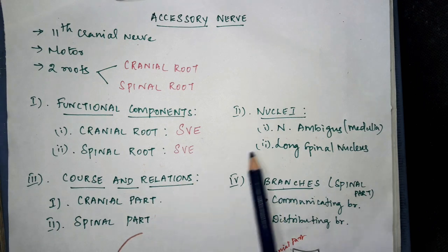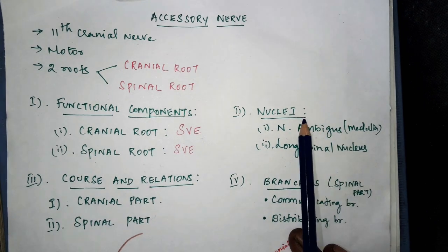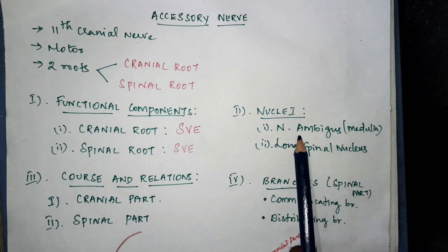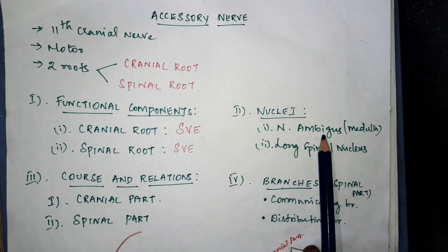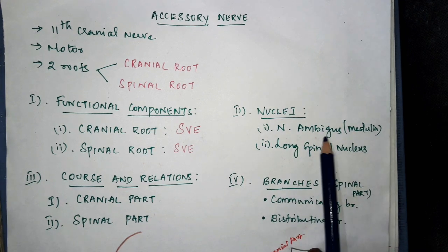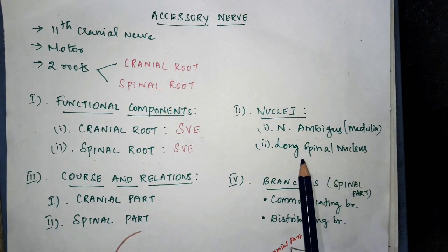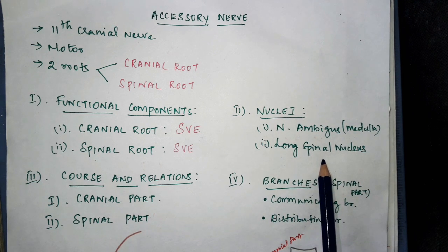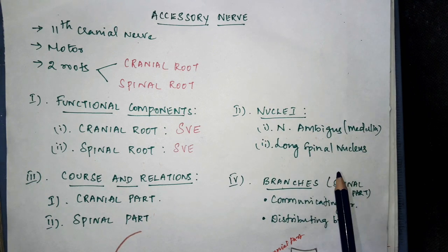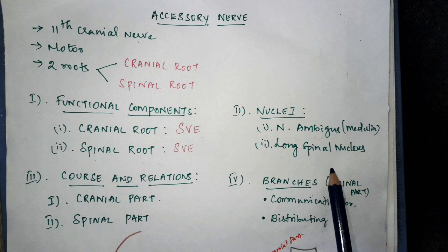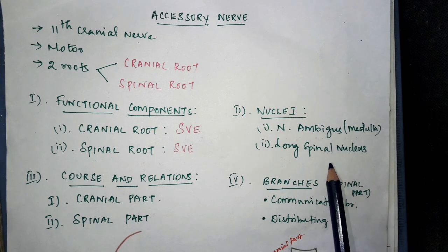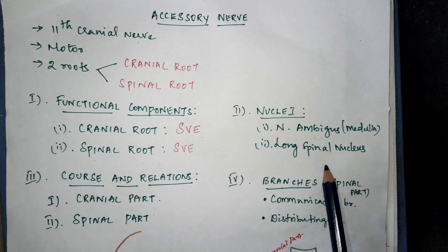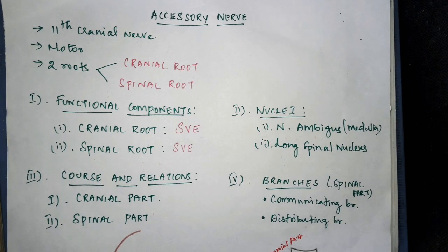The nuclei for the accessory nerve: the cranial part is the nucleus ambiguus, situated in the medulla. The long spinal nucleus is present in the spinal cord, extending from C1 to C5 spinal segments on the lateral part of the anterior grey horn.